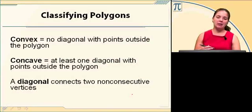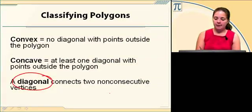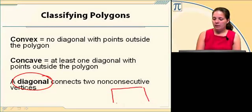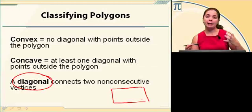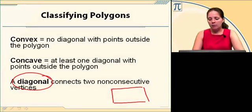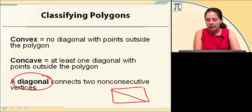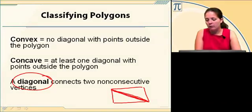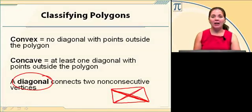Convex, concave, diagonal. To understand convex and concave, let's first talk about what a diagonal is. A diagonal is a line segment that connects two non-consecutive sides, two sides that aren't already connected. In my quadrilateral, this is one of my diagonals, right through the middle of my quadrilateral. I have two diagonals. Those are both diagonals.